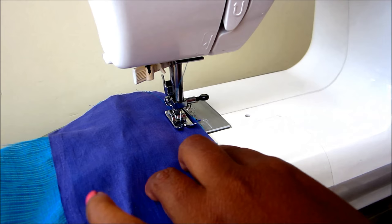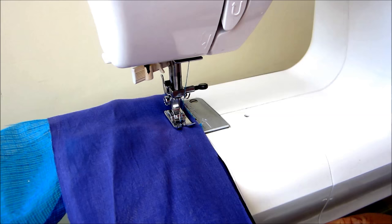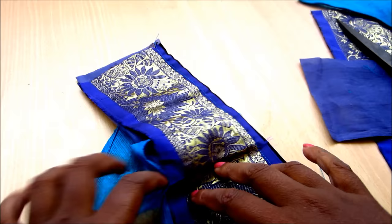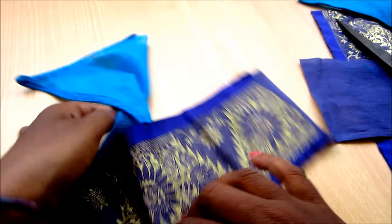You can see here the bodice part is ending. Now continue sewing, joining the lining and the silk bordered lace. Now turn towards the pretty side, it would look like this.